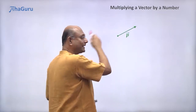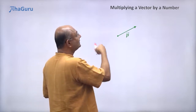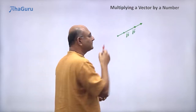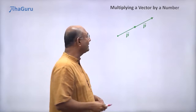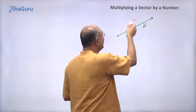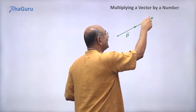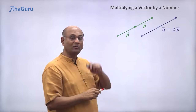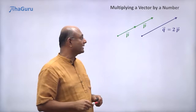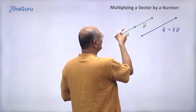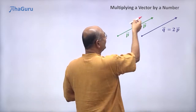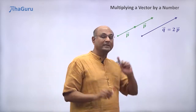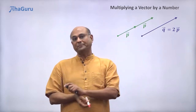I have this vector p, and I am going to double it. What does double mean? I am going to take the same thing and duplicate it. So now I am going to start here and end there. I get a longer vector which I will call q vector, where q vector is 2 times p vector.